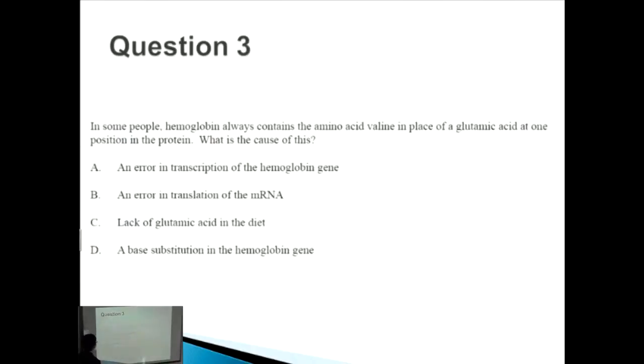In some people, hemoglobin always contains the amino acid valine in place of a glutamic acid at one position in the protein. What is the cause of this? This is exactly the reverse question of what we had before regarding sickle cell anemia. Answer A, an error in transcription of the hemoglobin gene, talks about how the DNA would be normal but then once you go to the mRNA which is transcribed, they're saying that this is where the key error is. That's incorrect.